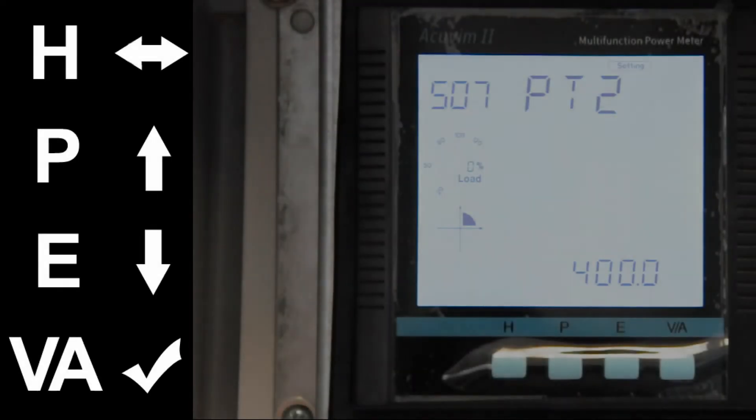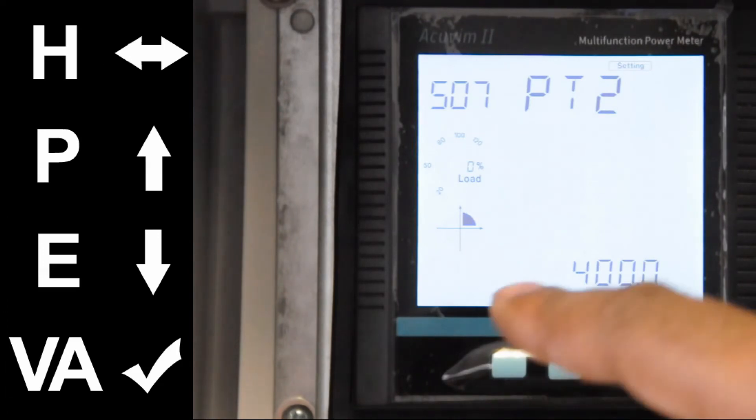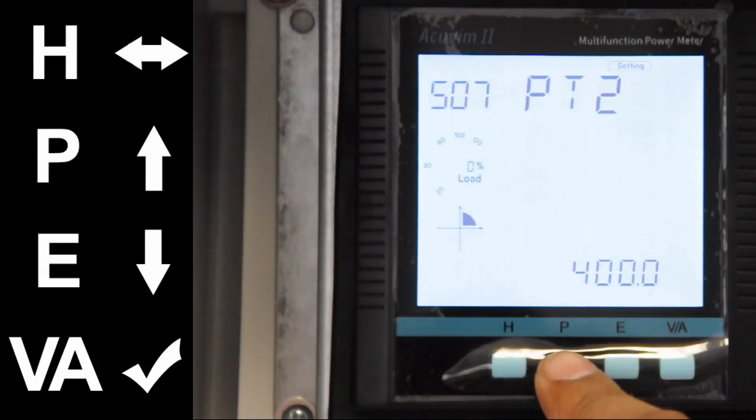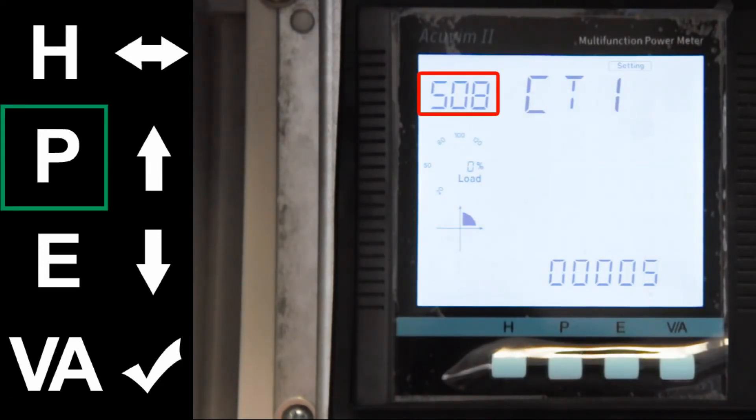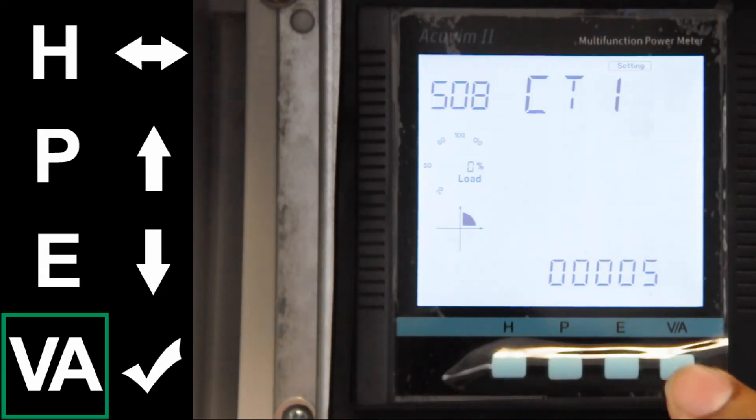Now, moving on to the CT ratio. From S07, you will press P to go to S08. This is our CT1. Press VA to enter into the session.